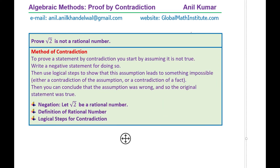Before getting into the details, let us go through the process of contradiction. The method of contradiction involves these steps: to prove a statement by contradiction, you start by assuming it is not true and write a negative statement. Then use logical steps to show that this assumption leads to something impossible — either a contradiction of the assumption itself or a contradiction of a known fact. Then you can conclude that the assumption was wrong and so the original statement was true.